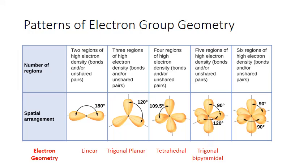Finally, you can have six regions of high electron density. In that case, your shape is called octahedral. All of those electron groups are 90 degrees away from each other in both the equatorial plane and the axial plane.